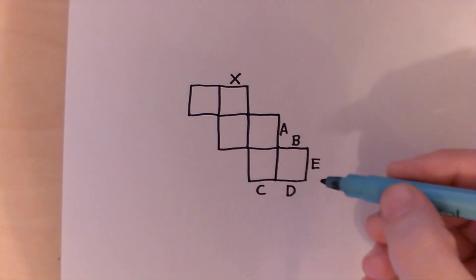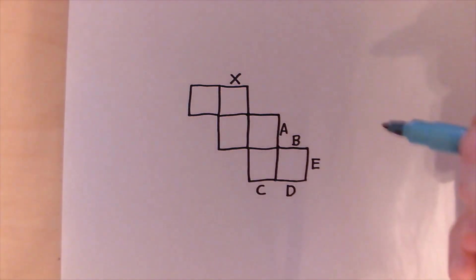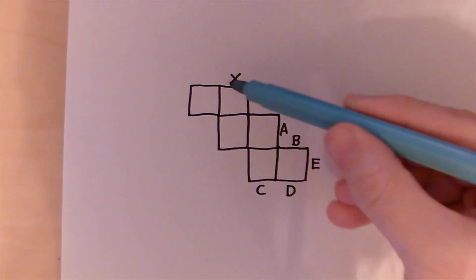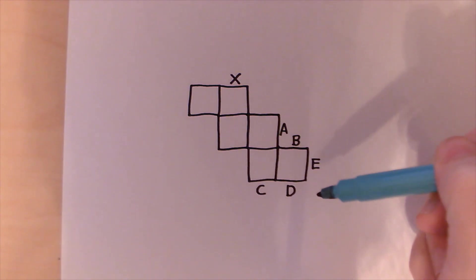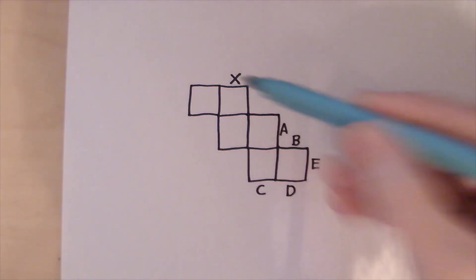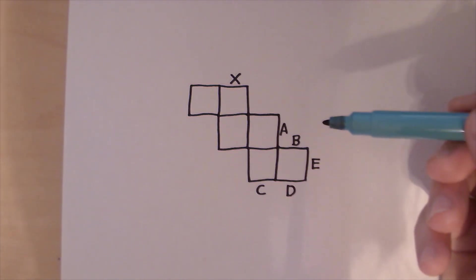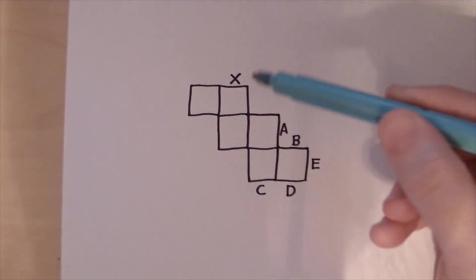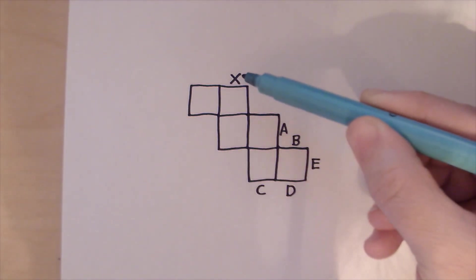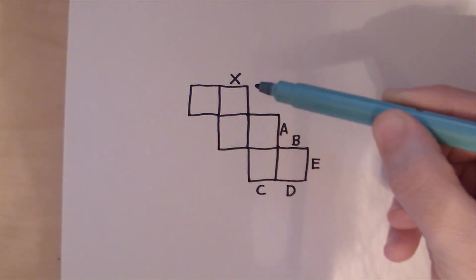And one last little problem for you today. The diagram shows the net of a cube. So you've got to remember what a net is, an unfolded shape. So which edge, when it's all folded up, would meet with X? So the diagram shows the net of a cube. Which edge meets the edge X when the net is folded to form the cube?